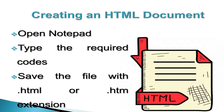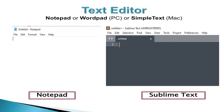Now, creating an HTML document. When we have to create any HTML document, we have to open Notepad, type the required code, and save the file with the extension .html or .htm. We can choose any Notepad of any operating system and type the HTML code there.